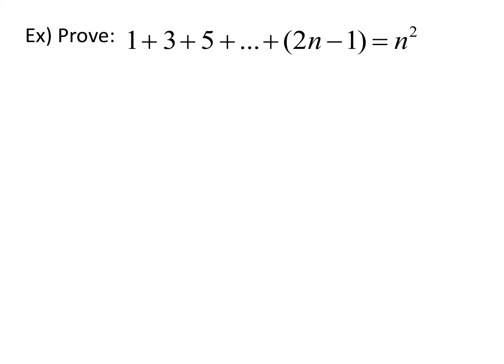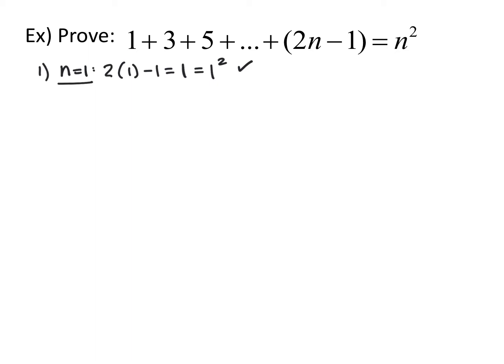For this first proof, we want to prove that 1 plus 3 plus 5 plus so on and so forth plus 2n minus 1 is equal to n squared. The first thing we do is prove it's true for n equals 1. If we plug in 1 to the left side, we get 2 times 1 minus 1, which is 1. On the right side, 1 squared is also 1, so we've proved it true for n equals 1.